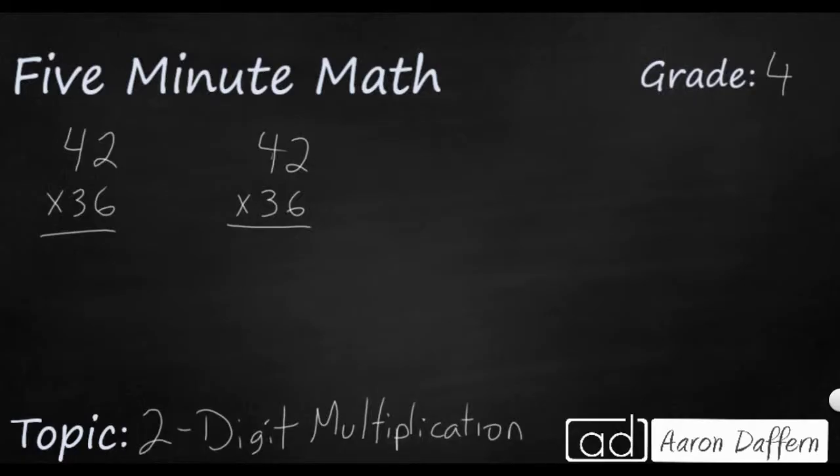What we're doing is taking this 42 and this 36. We're going to take the 42 and split it into 40 plus 2, and multiply that by 30 plus 6. We're breaking it down by place value in both sections.